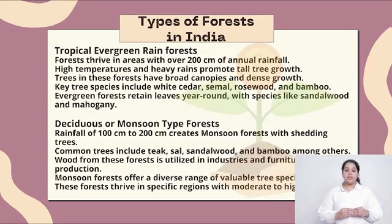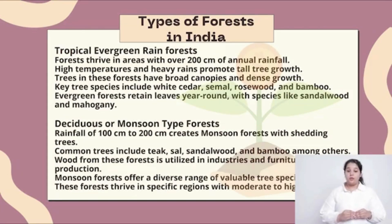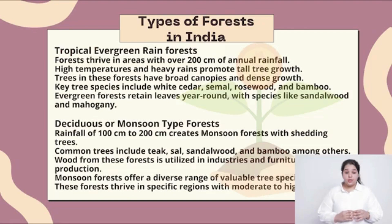Tropical rainforest. These forests thrive in areas with over 200 cm of annual rainfall. High temperatures and heavy rains promote tall tree growth. Trees in this forest have broad canopies and dense growth. Key tree species include white cedar, teak, rosewood and bamboo.